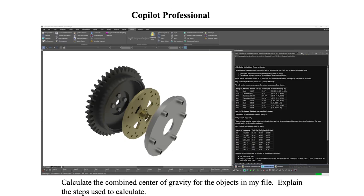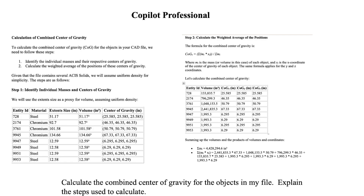Now, let's move on to examples with Co-Pilot Professional. In this example, we ask Co-Pilot to calculate the combined center of gravity for an assembly. Co-Pilot extracts from the object's relative mass property data and from its general knowledge pool, utilizing a formula for calculating the combined center of gravity. Here is a close-up of the response, and since we asked Co-Pilot to show all steps used in the calculation, we can double-check the method and the results.